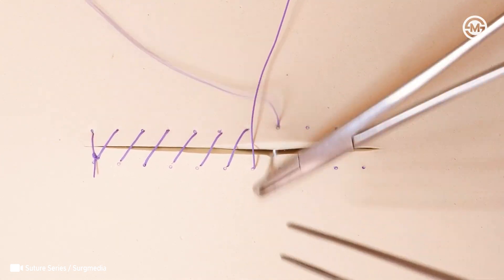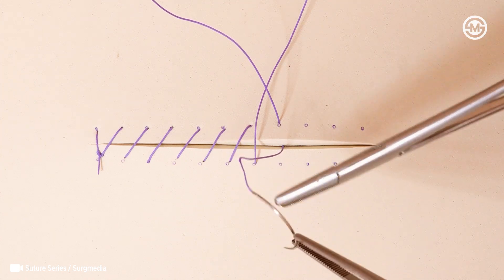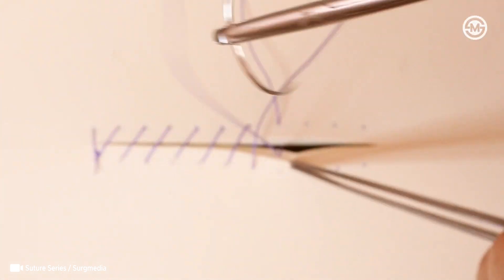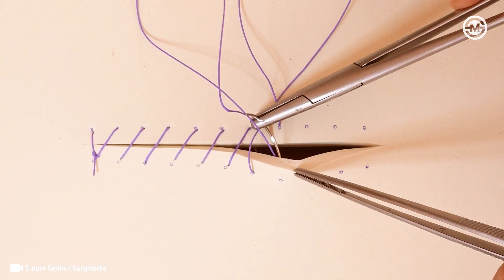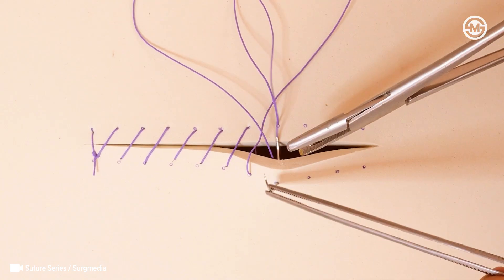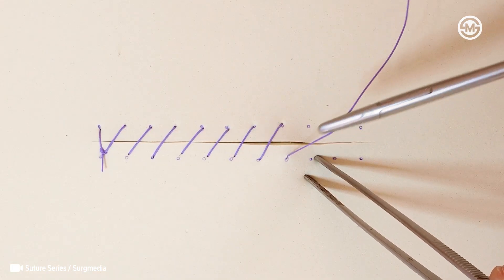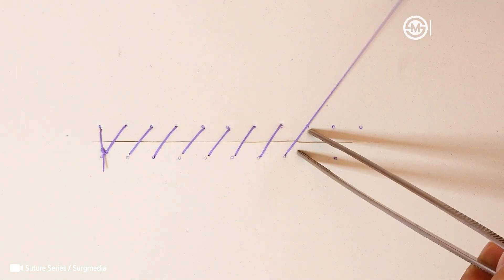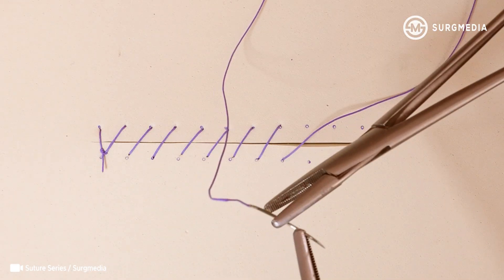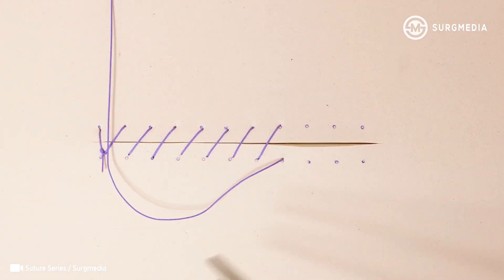But of course, there are a few downsides to be aware of. If the suture breaks at any point, it can compromise the entire closure. And if you apply too much or too little tension, you might run into healing problems, from poor approximation to full wound dehiscence.